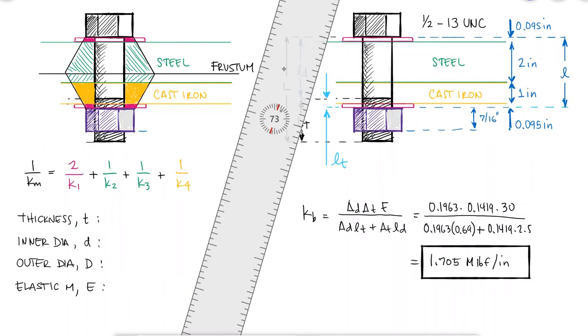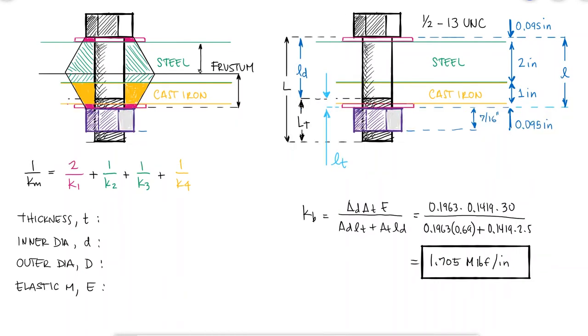With the frustum being located at a distance of a grip over 2, we find that the thickness of k1 is the thickness of the washer, the thickness of k2 is 1.5, 0.5 for k3, and the thickness of the cast iron plate for k4.